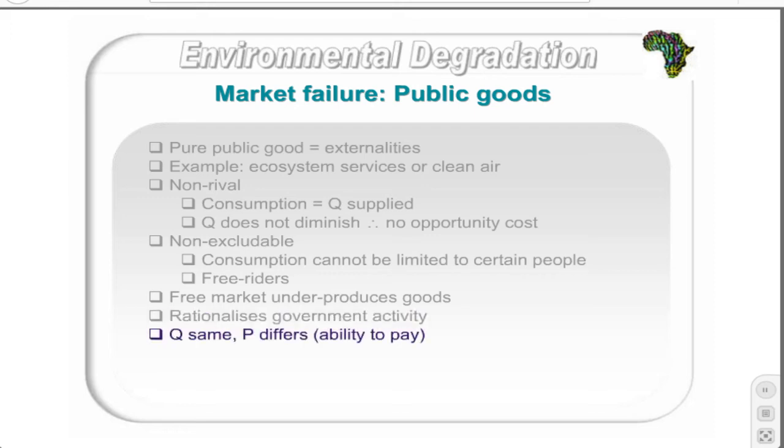These characteristics of public goods rationalize government activity financed with general taxation, where government provides a given supply and prices differ according to consumers' ability to pay.